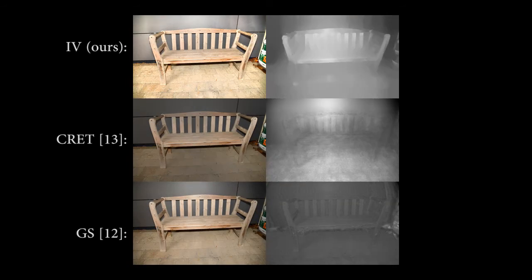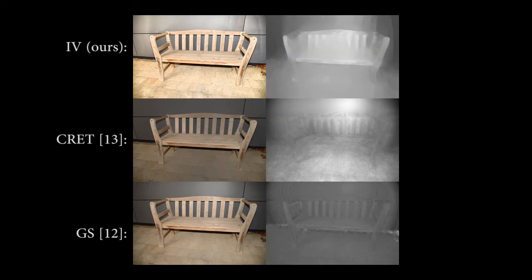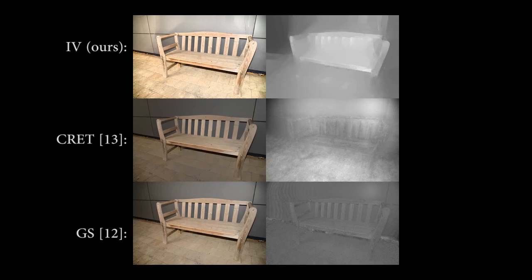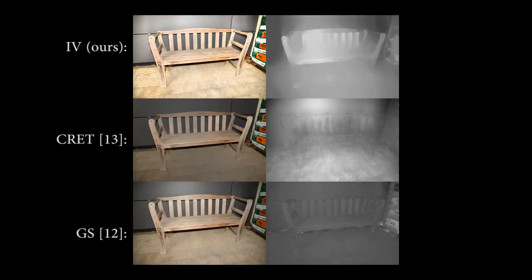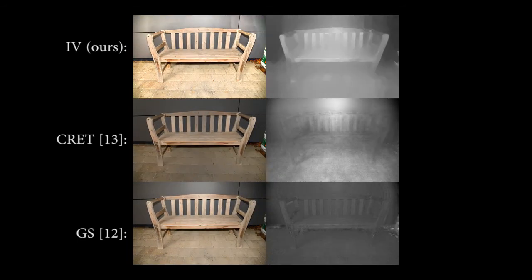The shading from previous methods carries a lot of albedo information. In contrast, our shading sequence has few albedo details and well captures the overall shape of the scene, mostly obeying object boundaries.